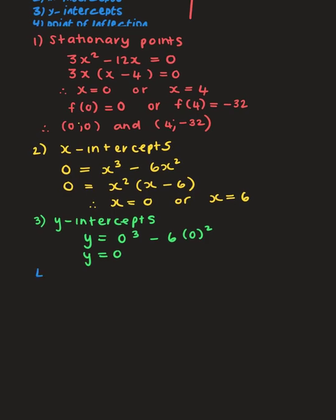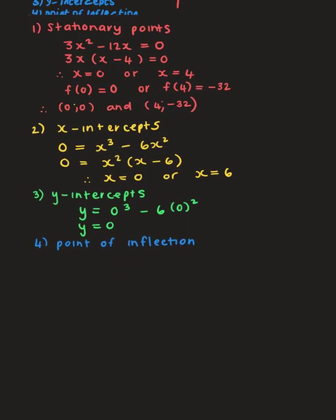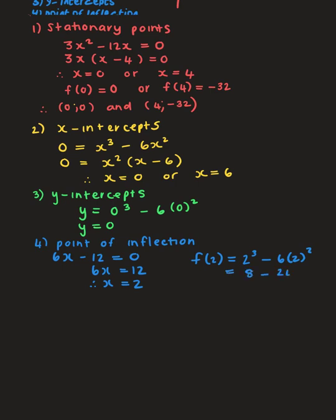For the point of inflection, we let the second derivative equal zero. The second derivative is 6x - 12, so 6x - 12 = 0 gives x = 2. Substituting back into the original equation: 2³ - 6(2²) = 8 - 24 = -16. Therefore the point of inflection is (2, -16).